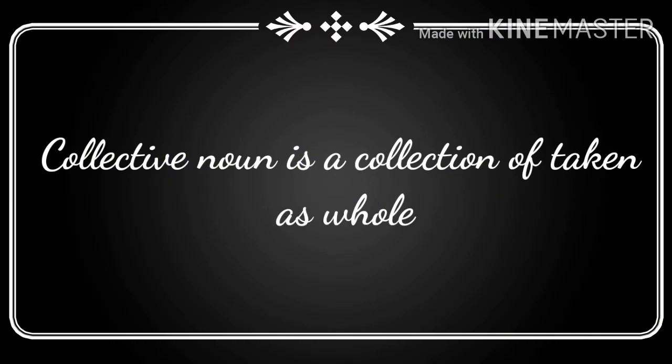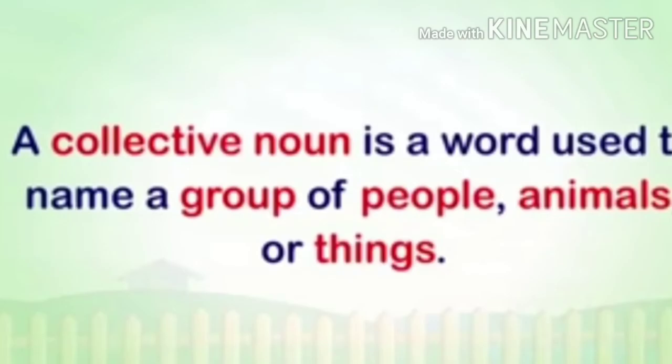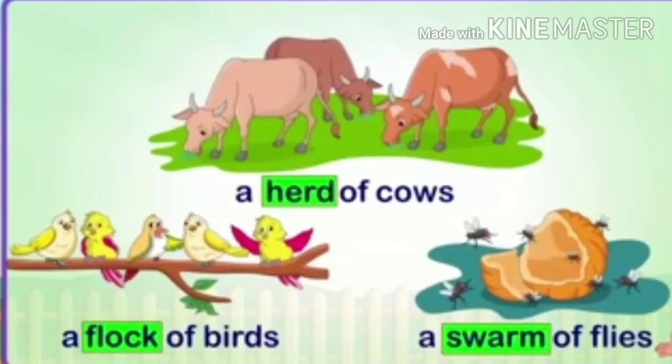A collective noun is a collection of things taken as a whole. A collective noun is a word used for a group of people, animals, or things. For example, a herd of cows means a group of cows, and a flock of birds means a group of birds.